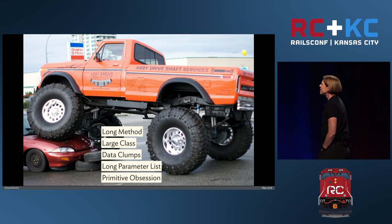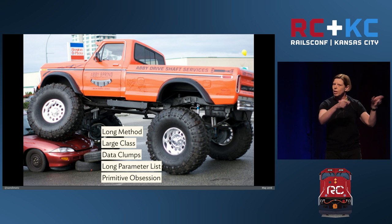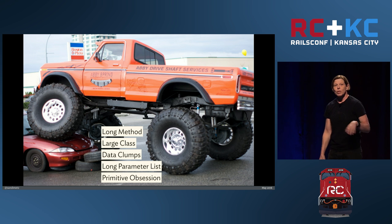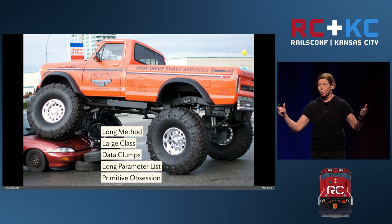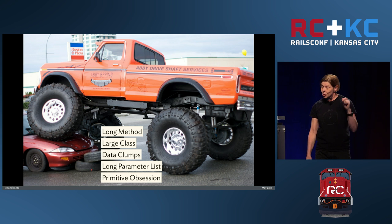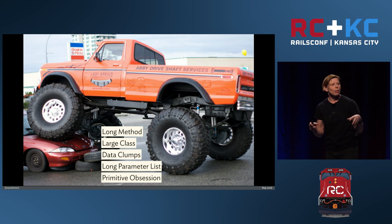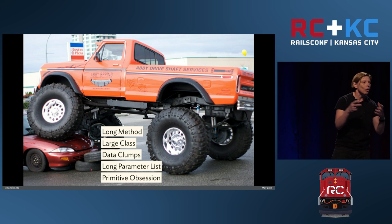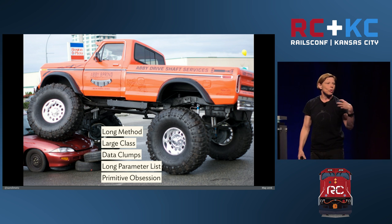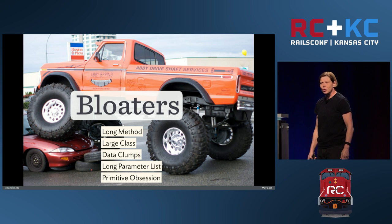This is a list of things that just do not need to be that big. Long method and large class are probably self-explanatory. Data clump is when you have two or more pieces of data that always appear together — you pass them around over and over again together. Long parameter list is obvious; if it's long enough, there's probably an object in there somewhere. And the wonderfully named primitive obsession is when you have an instance of a base class — like a string, number, hash, or array — and you pass it around to objects that look at it and decide what to do based on something they know about it. These things are grouped in a category called bloaters — they make code bigger than it needs to be.